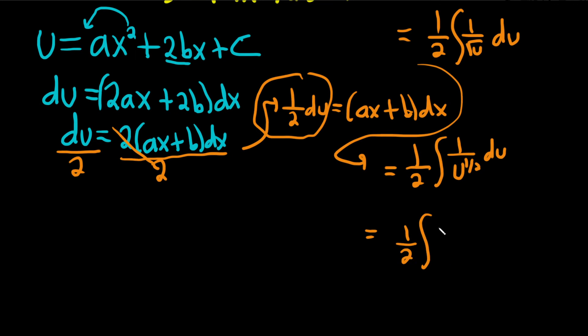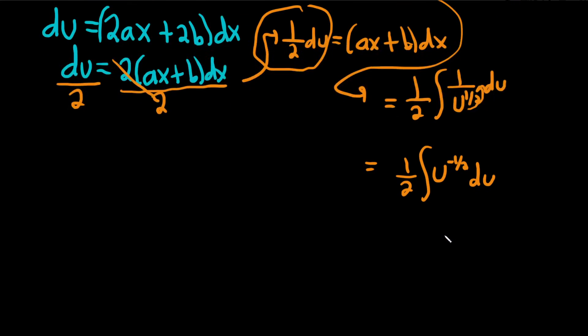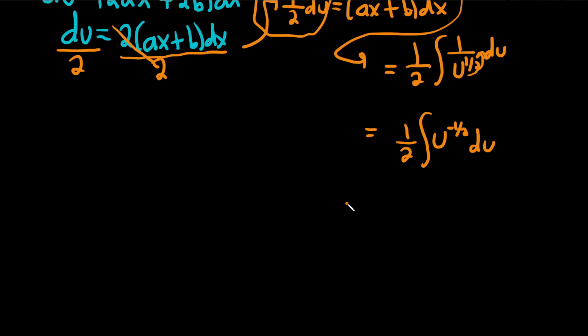We want to use the power rule for integration. So bring it up and your exponent becomes negative. And now we can use the power rule. So we basically just add 1 to the exponent and divide by the result.